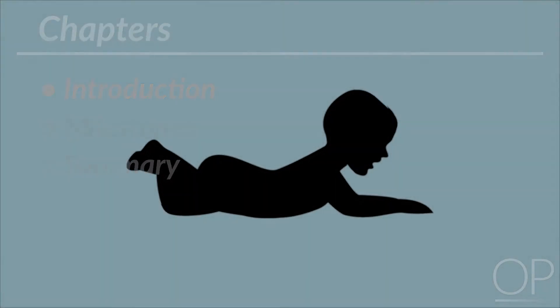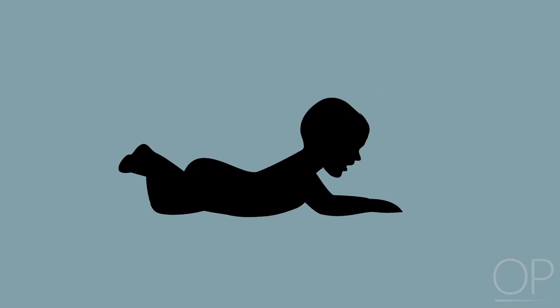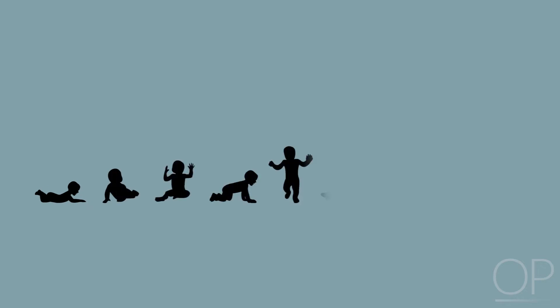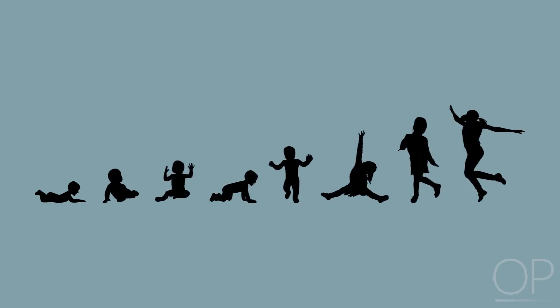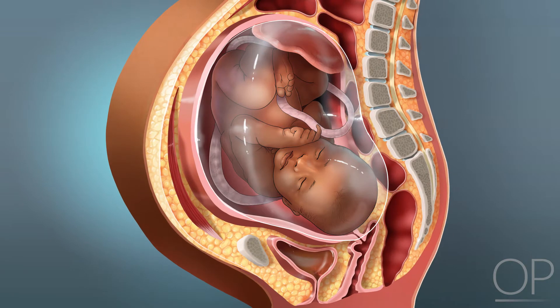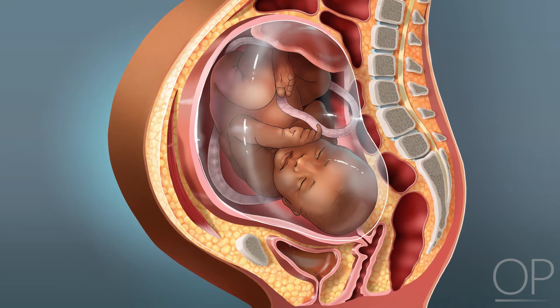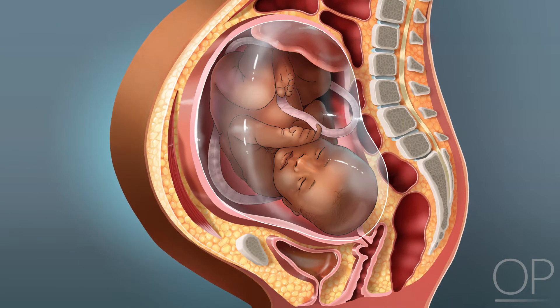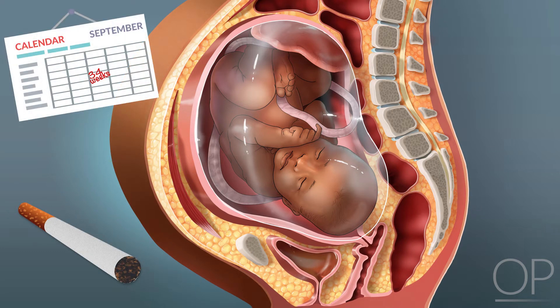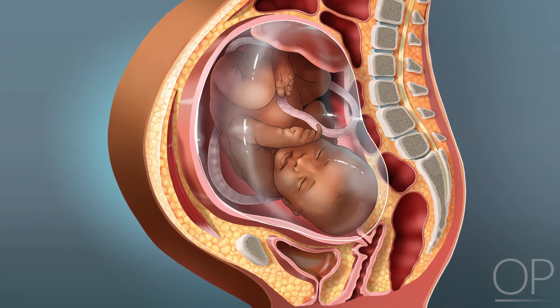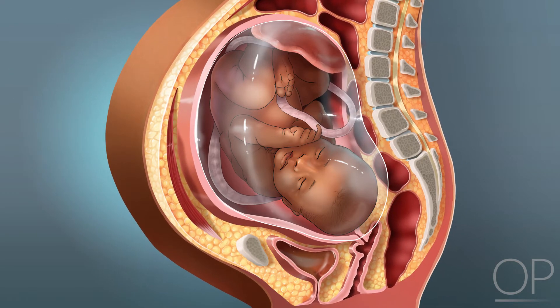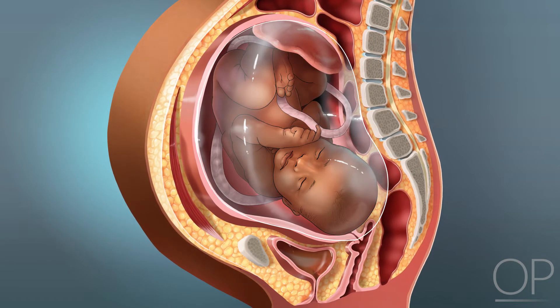Introduction. Child development is central to the practice of pediatrics. It begins at conception and continues into adulthood. Prenatal development falls outside the scope of this video, but a child's in utero development will impact his or her life course, particularly if she is exposed to substances, born prematurely, or affected by abnormal embryologic development. There is an increasing awareness of how profoundly maternal health can impact fetal and child development. After birth, a child progresses through subsequent stages of skill acquisition, which pediatricians call developmental milestones.